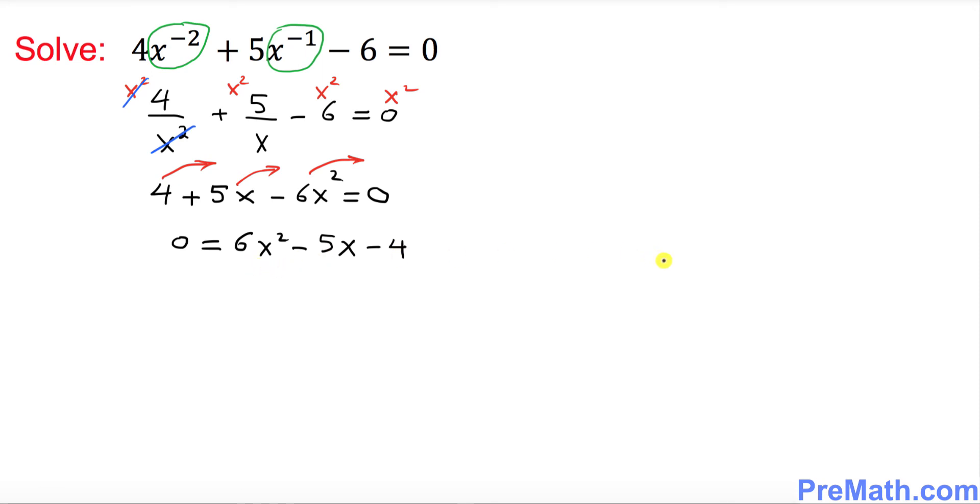Now I want you to look at this fact. If 0 equals A, it doesn't make any difference if I put A equal to 0. So I want to put 0 on the right hand side because it won't make any difference. So I'm going to put down 6x squared minus 5x minus 4 equal to 0.